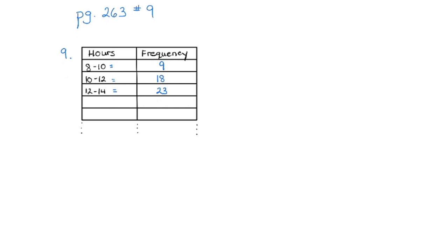One final note about entering data: often you don't have students getting exactly 40 or 50 — it's within the 40s, within the 50s. So in the table of values, you'll frequently see a range of data points. You can't type a range into List 1, so you need to find the midpoint. For example: 8 plus 10 divided by 2 gives a midpoint of 9; 10 plus 12 divided by 2 gives 11; 12 plus 14 divided by 2 gives 13. Calculate the midpoint for each range, and that's what you put into List 1, with the frequency in List 2.